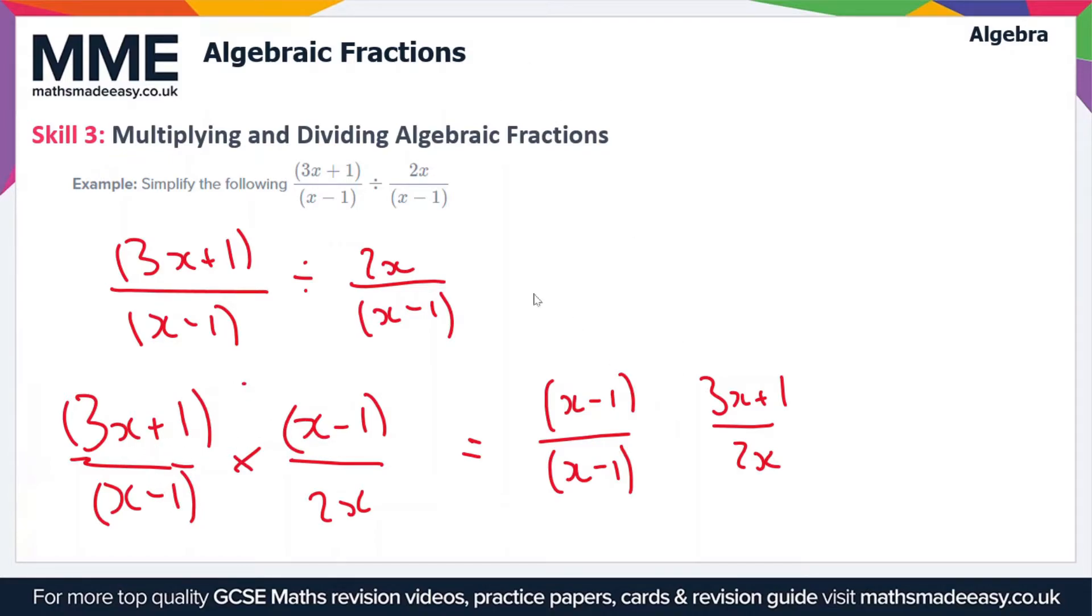So I could write this all as one fraction if I wanted to, where it's (x - 1) times (3x + 1) over (x - 1) times 2x. But here I'm going to treat this as two separate fractions multiplied together.